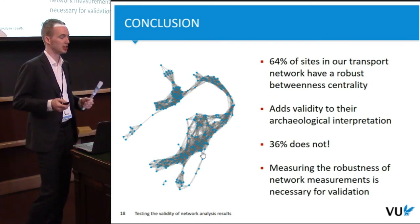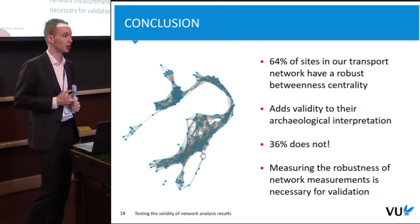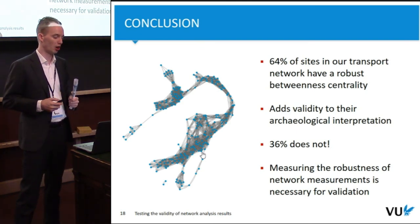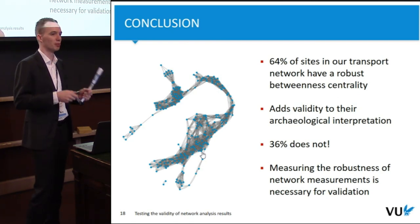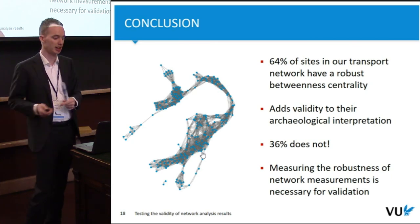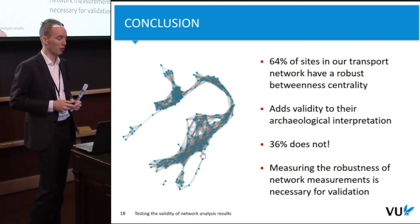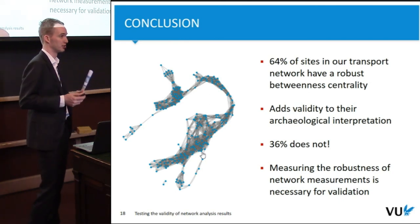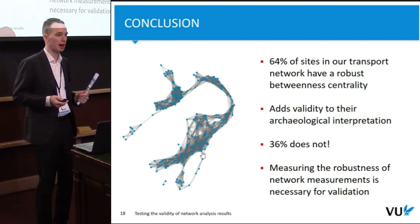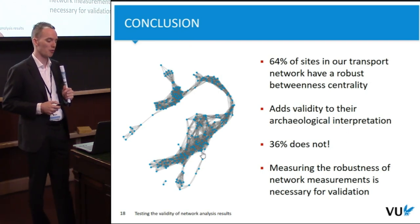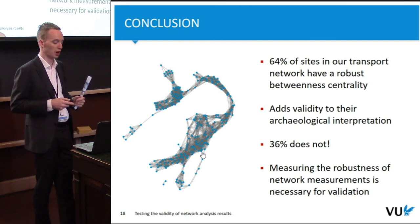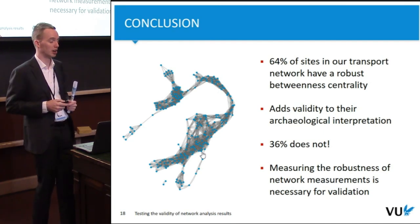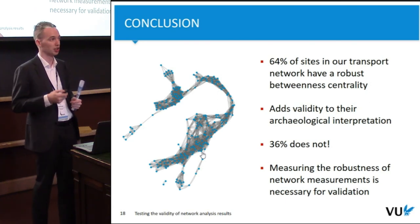To conclude: 64% of sites in our transport network have a robust betweenness centrality, which adds validity to the archaeological interpretation — they are not entirely dependent on that precise network structure and would remain stable under minor variations such as missing or incorrectly attributed sites. However, 36% of sites don't have a robust betweenness centrality, so we cannot be certain about their archaeological interpretation. Therefore, measuring the robustness of our network measurements is necessary to validate our archaeological interpretations.